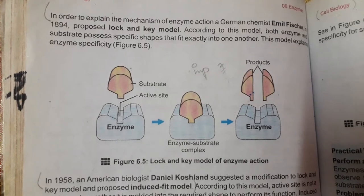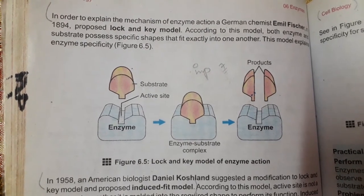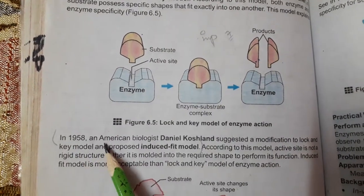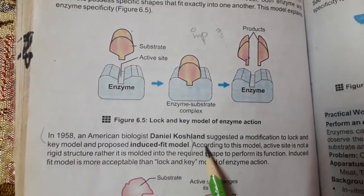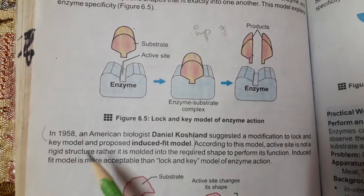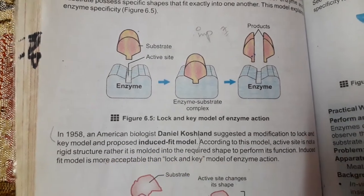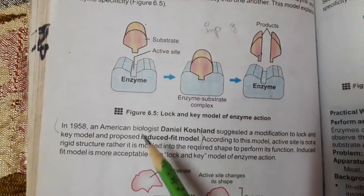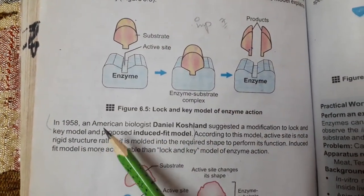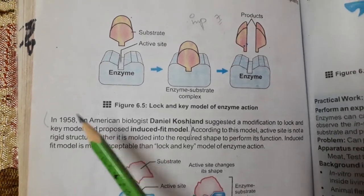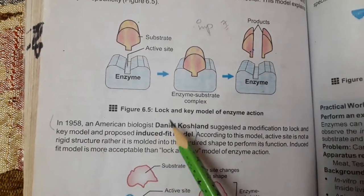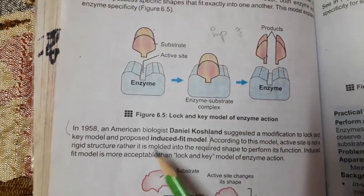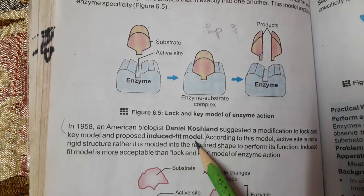This was the first model. Then later, in 1958, an American biologist Daniel Koshland suggested a modification to the lock and key model and proposed the induced fit model. The lock and key model is no longer accepted because there were some limitations and drawbacks.